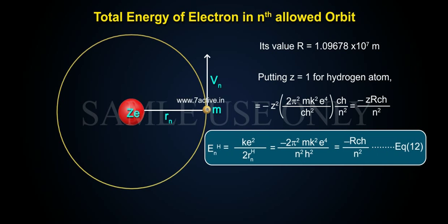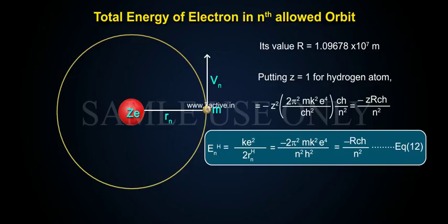Putting Z equals 1 for hydrogen atom, we get En(H) equals minus 2π²mk²e⁴/n²h², equals minus Rch/n² — Equation 12.